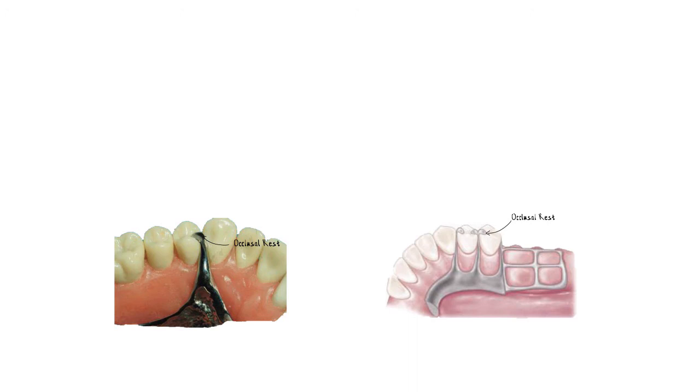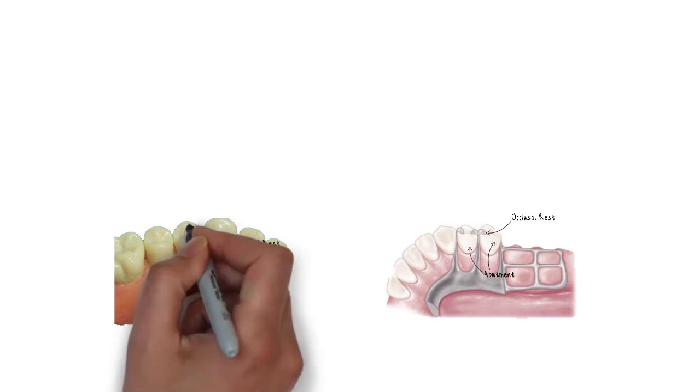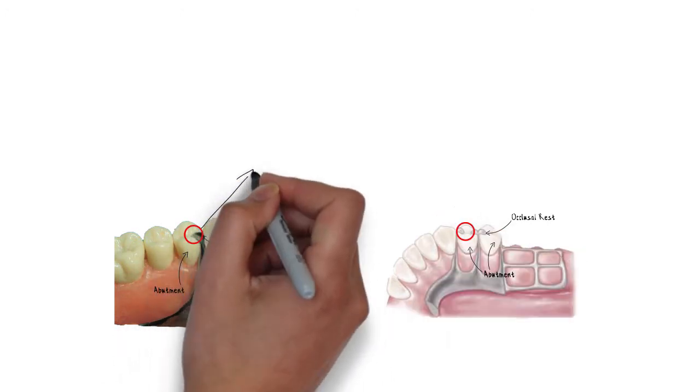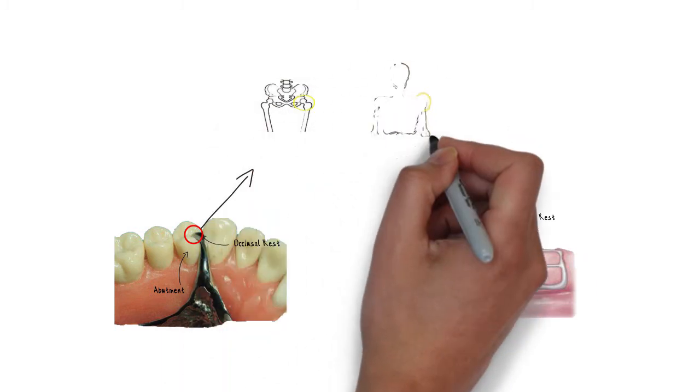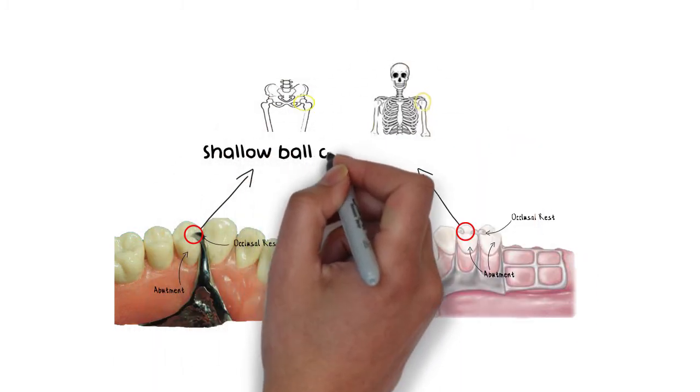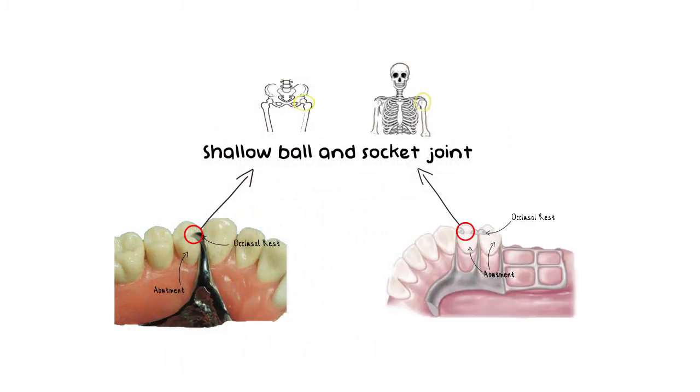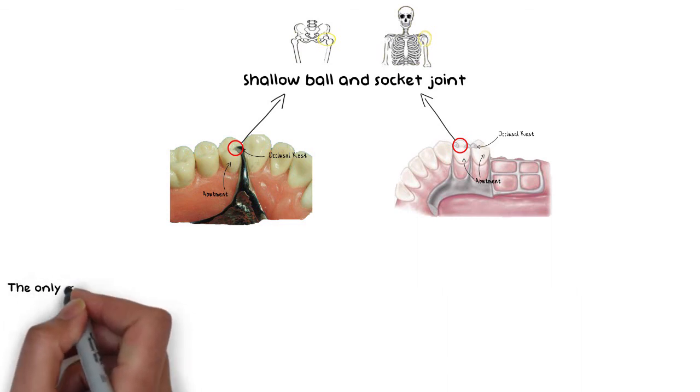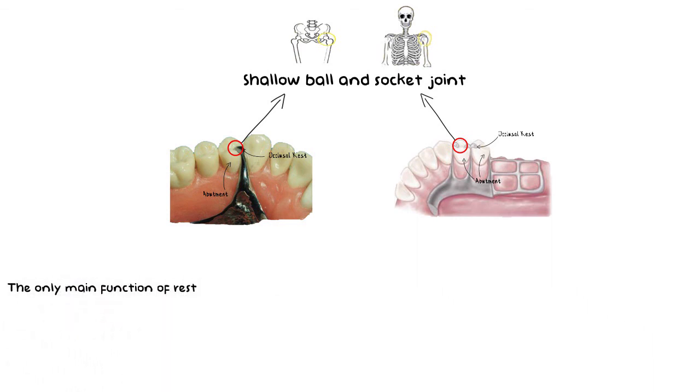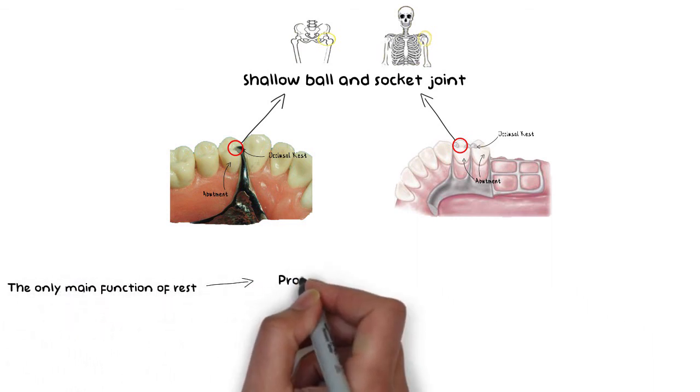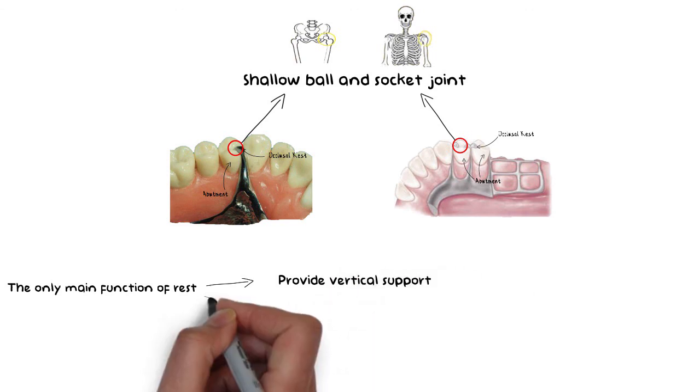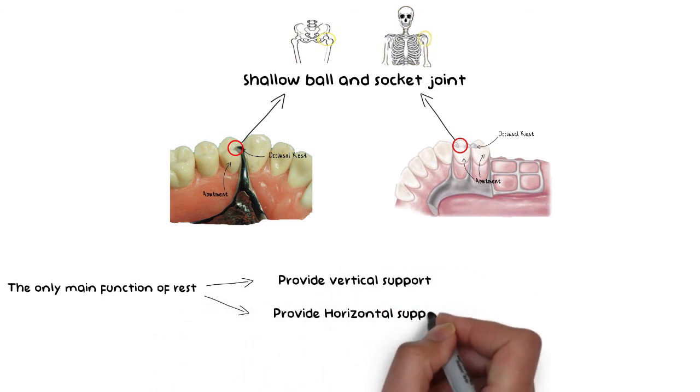One key point regarding the joint between the occlusal rest and the abutment is that the joint between the two should be like that of a ball and socket joint in our body. This will avoid transferring of horizontal forces towards the abutment teeth. We need to remember that the only main function of occlusal rest is to provide the vertical support to the prosthesis, while that against horizontal forces is provided by other components rather than the locking effect of the occlusal rest.